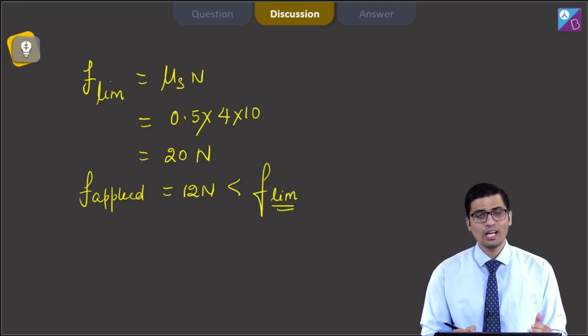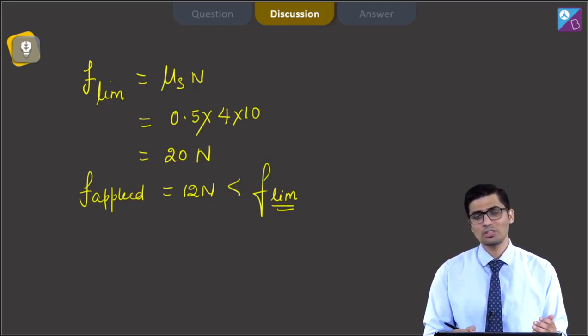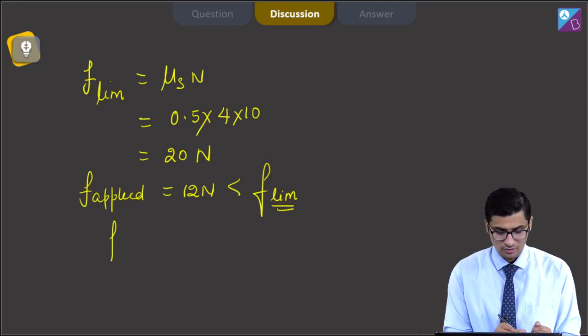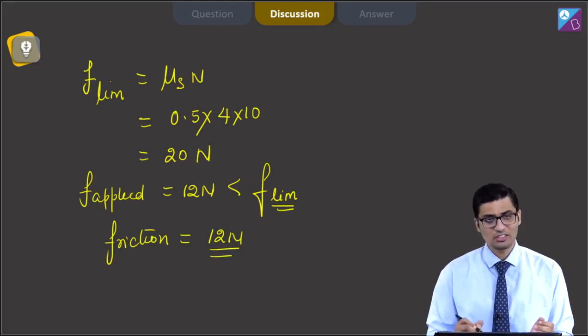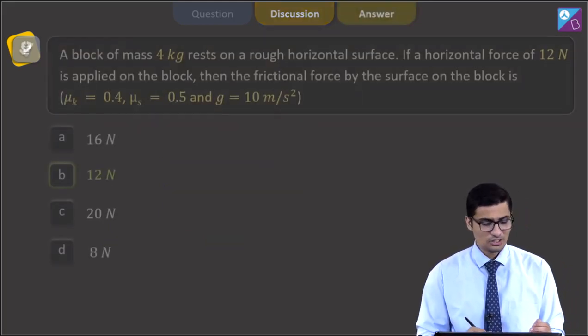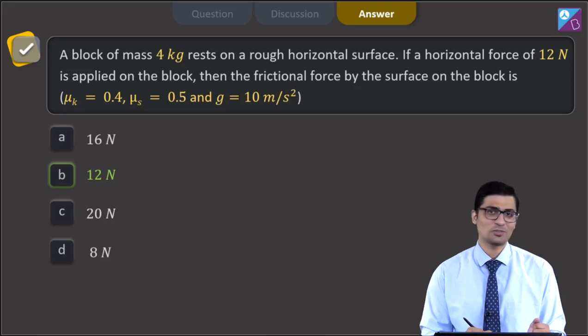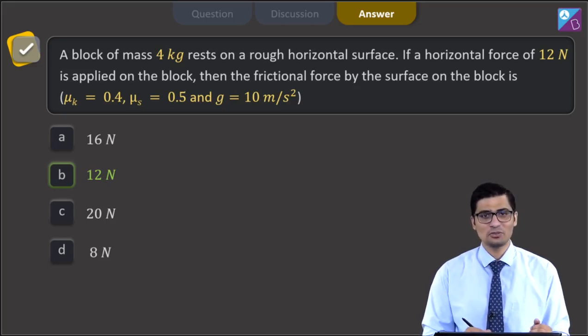Thus, the block will not move and the frictional force will act only equal to the applied force. Thus, the value of the frictional force will be equal to 12 N only as it will self-adjust to the applied force. Therefore, for this question, the correct answer is B that is 12 N. Now let us proceed to the next question.